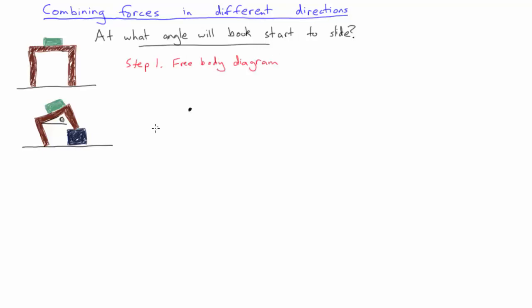The first step in a problem with forces is always to draw a free body diagram. In this case we have gravity acting downwards, the normal force acting perpendicular to the table, and the frictional force acting upwards along the slope of the table.